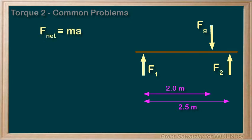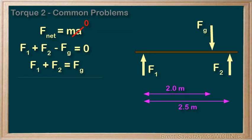F net equals ma, and it's in equilibrium, so a equals zero. Now with up being positive, we would have f1 plus f2 minus fg equals zero. And we could arrange that to be f1 plus f2 equals fg.